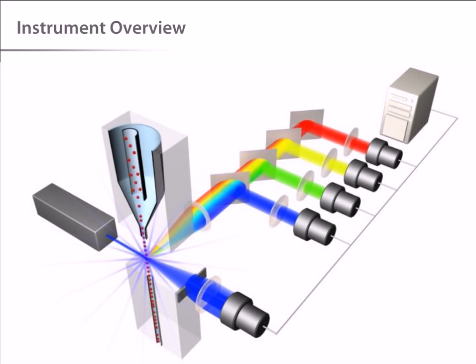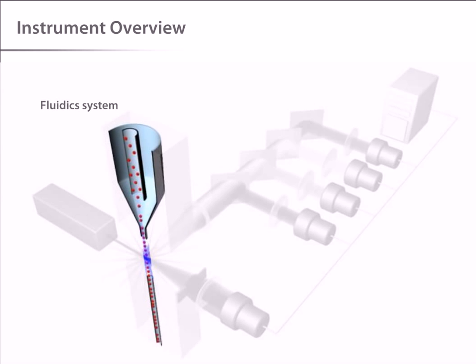This view shows the primary systems of the flow cytometer schematically. These are the fluidic system, which presents samples to the interrogation point and takes away the waste,